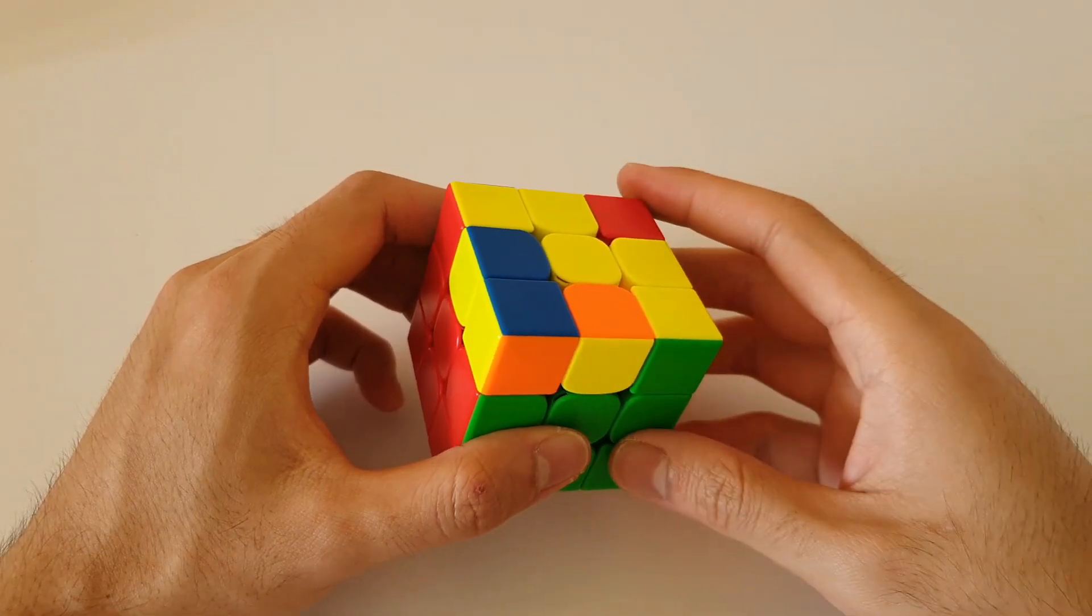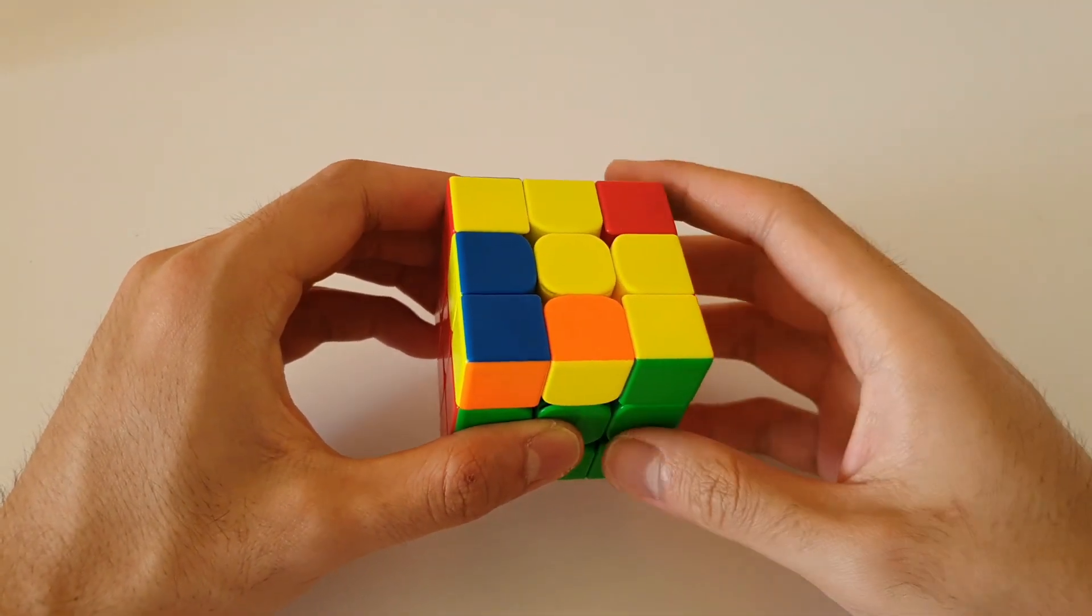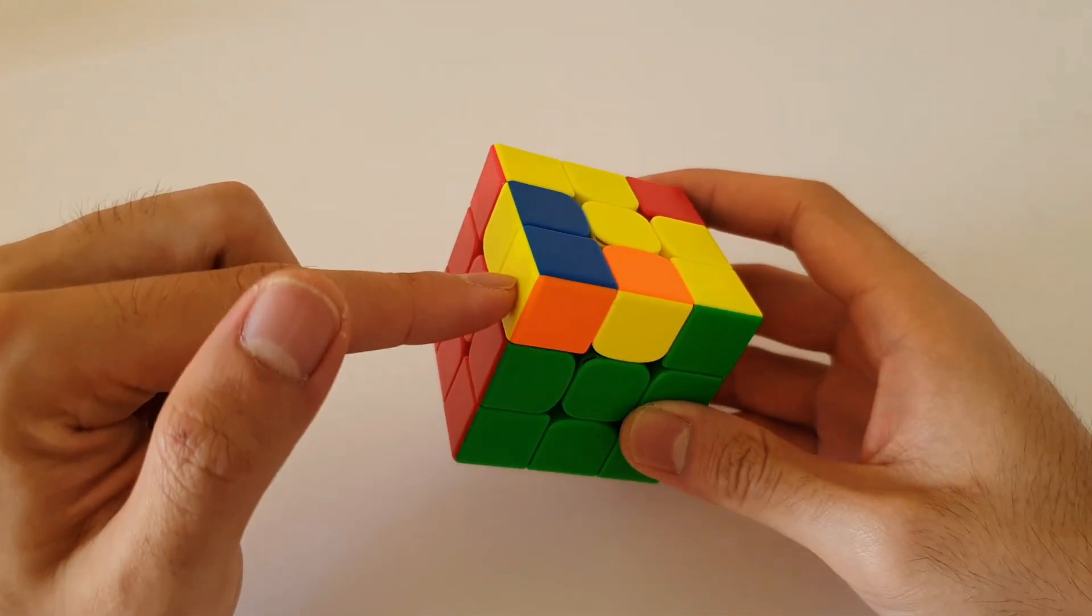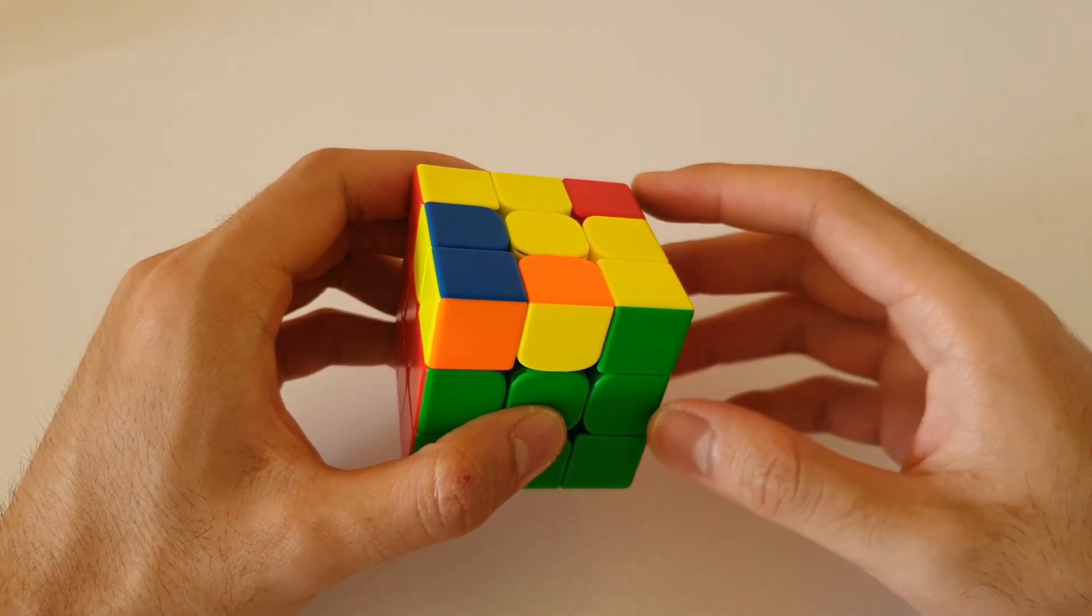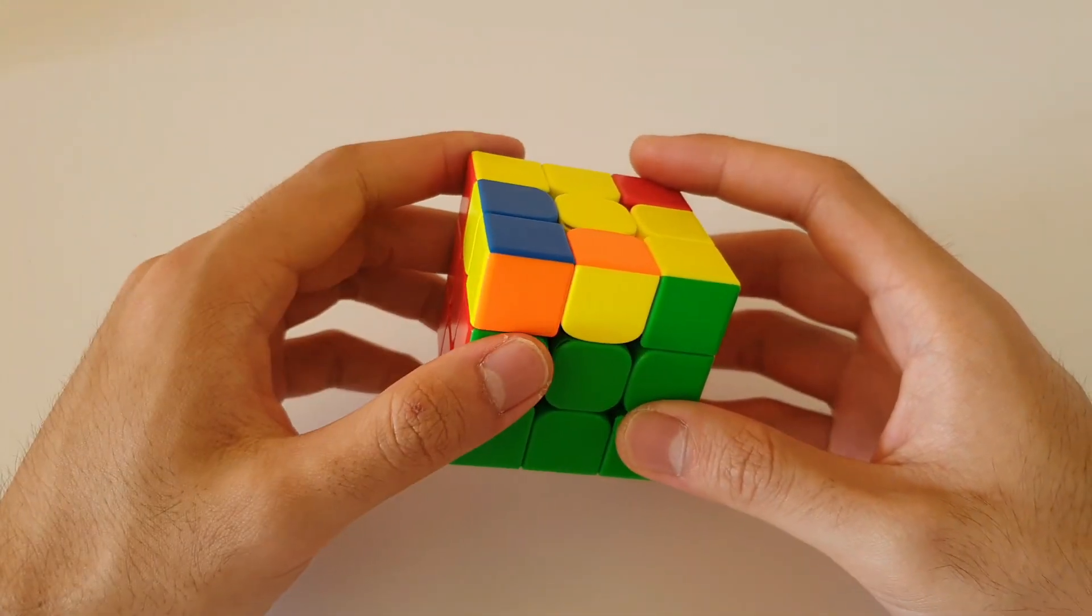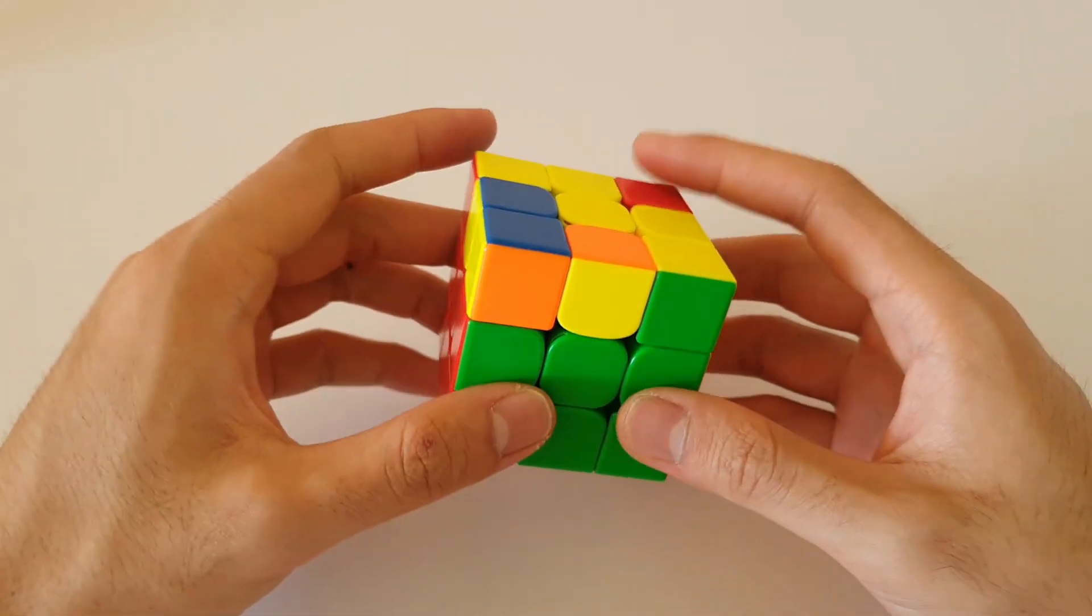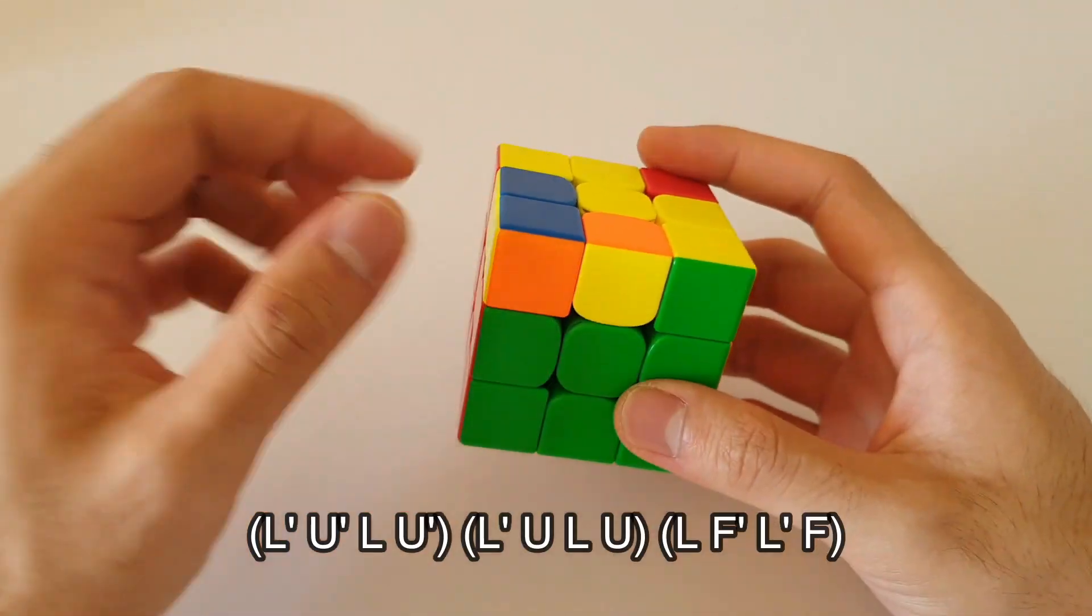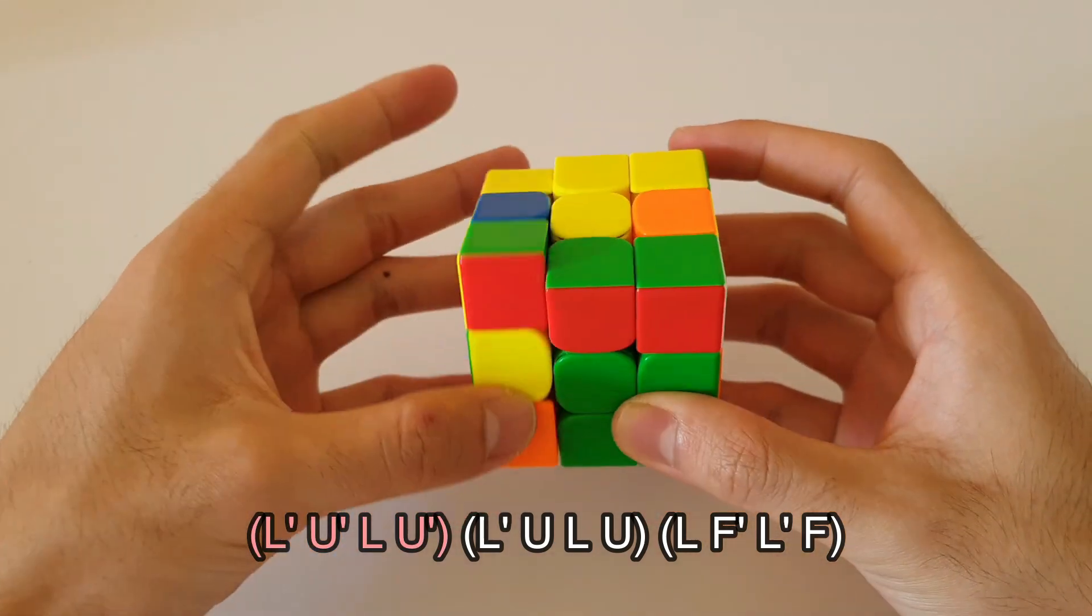So moving over to our left-handed case, we recognize it by the M on the top layer and the 2x1 bar this time will be on the left side. So exactly the same algorithm as I showed previously, but in this case it'll be done with our left hand. We'll be focusing on the F2L pair on the left side. So it starts off once again exactly the same by taking the F2L pair out and then moving it to the back.